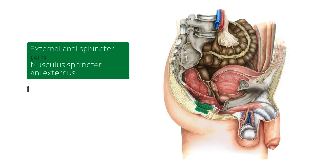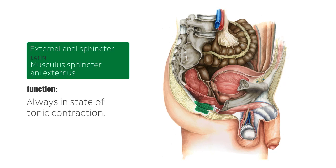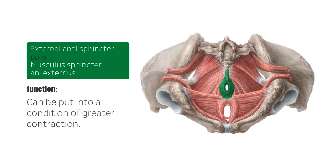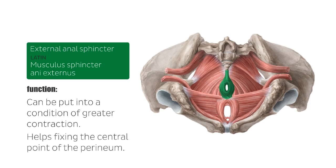The external anal sphincter, now visible on the parasagittal section, is always in a state of tonic contraction. With no antagonistic muscle, it keeps the anal canal and orifice closed, but can also be voluntarily contracted to more firmly occlude the anal aperture. Due to its fixed point at the coccyx, it helps fix the central point of the perineum so that the bulbocavernosus may act from this fixed point.